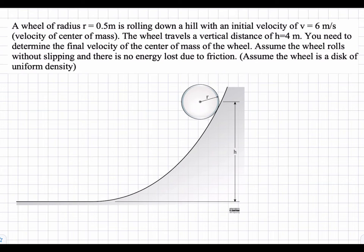We're assuming that there's no friction, there's no energy lost due to friction, and we can assume the wheel to be a disk of uniform density. So, this is a work energy problem where potential energy is converted into kinetic energy.